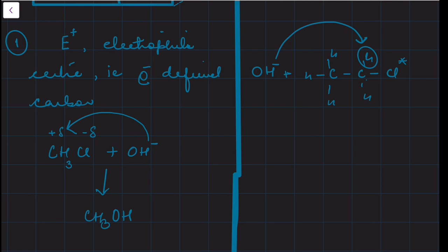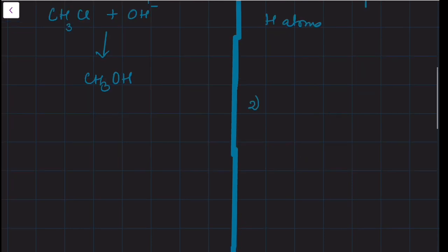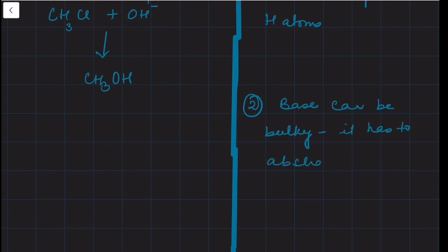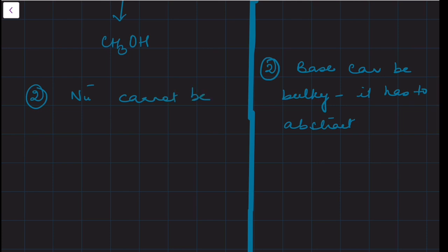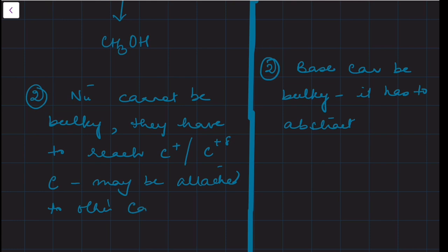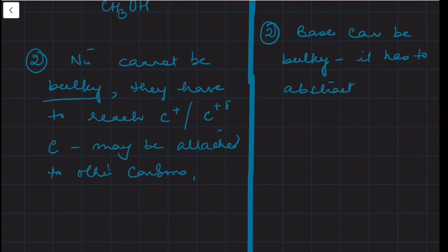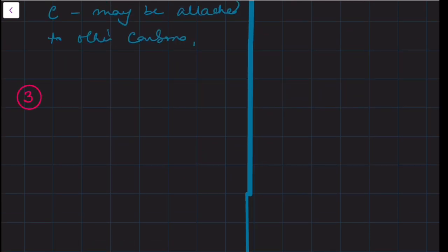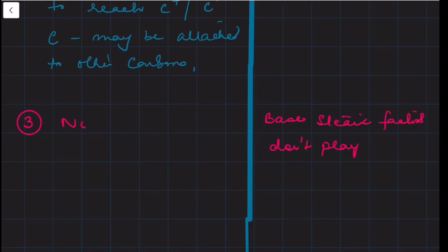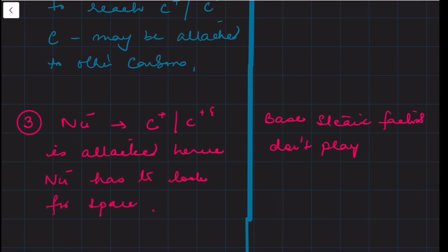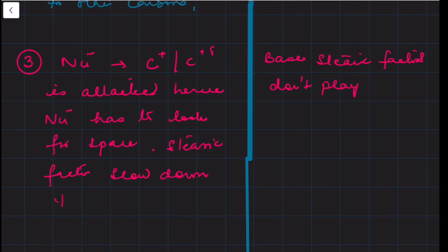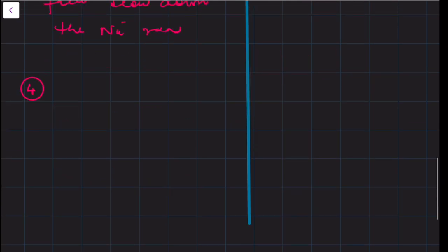It is going towards a small atom, so it won't face much difficulty even if the base is large. Base always attacks on the hydrogen atom — always remember. Base can be bulky because it only needs to abstract hydrogen. But nucleophile cannot be bulky because it has to reach the carbon that has a positive charge and is further attached to other carbons. Steric factors play no role for a base, since it goes toward a small atom, whereas steric factors play a very important role for a nucleophile, which must reach a carbon surrounded by many other groups. So a nucleophile should be small.